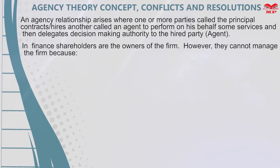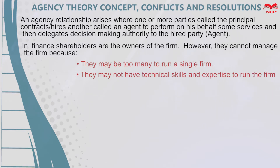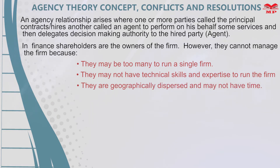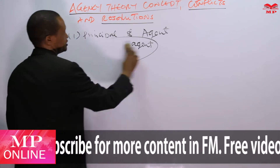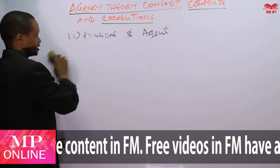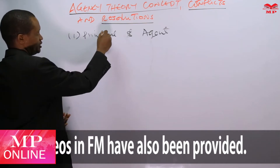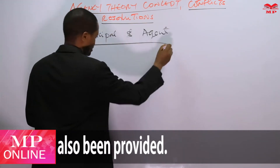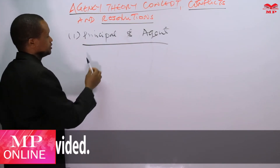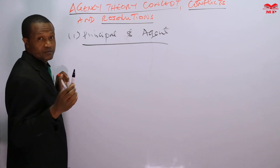In finance, shareholders are the owners of the firm. However, they cannot manage the firm because: number one, they may be too many to run a single firm; number two, they may not have technical skills and expertise; and number three, they are geographically dispersed and may not have time. So in finance, shareholders are the principal.